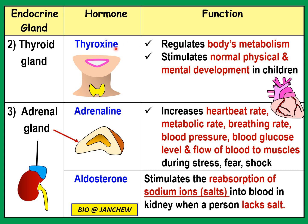The lower the level of thyroxine, the less the rate of respiration. For children, thyroxine is also very important to stimulate normal physical and mental development — children need thyroxine to grow normally, both physically and mentally. Without thyroxine, or with a low level of thyroxine, children will have their physical and mental development retarded or slowed down.